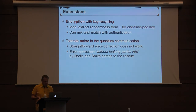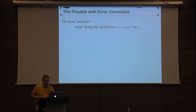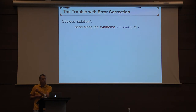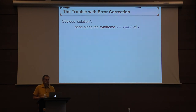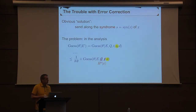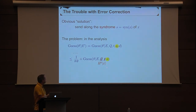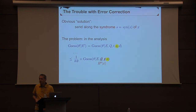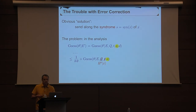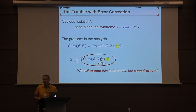What's the trouble with error correction? The obvious solution is to send the syndrome of x along, so that if Bob recovers a noisy version of x, he can recover the right x with the help of the syndrome. But if you go through the analysis, we get an expression where we additionally condition on the syndrome, and now the argument that x being uniformly random makes the qubits independent of theta no longer holds — because given the syndrome, x is obviously not uniformly random. One can meditate over this expression and feel it should still be small, but we have no clue how to prove it.